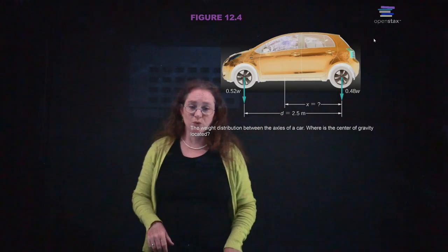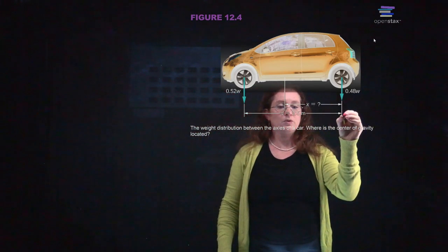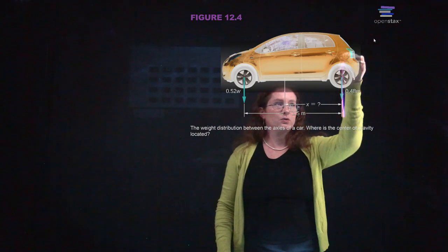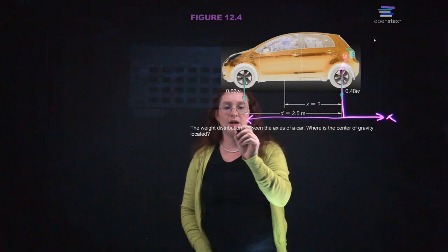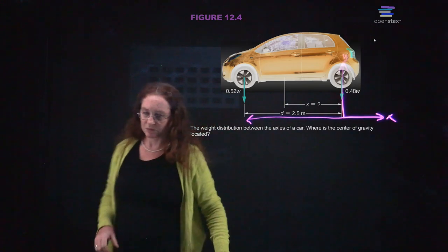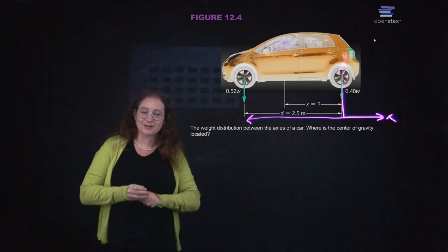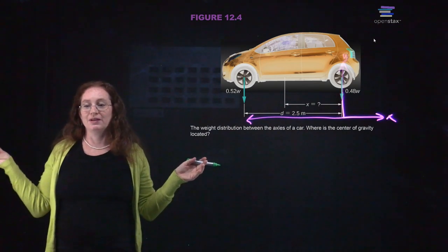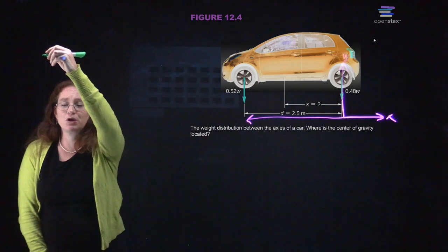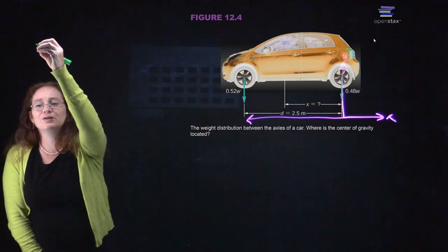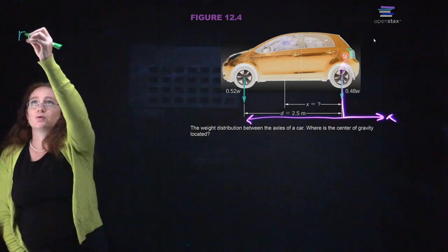We're coming back to our concept of the center of mass, because in most cases you can treat an extended object as if it is a point particle located at the center of mass, or center of gravity. Here is another example. I'm going to draw an axis — X here and Y here. And you're seeing the mirror image, so if it looks like my X's are always positive to the left instead of the right, that's why.